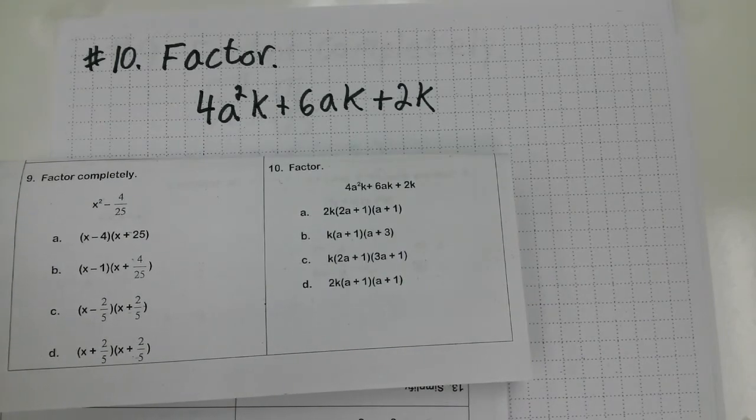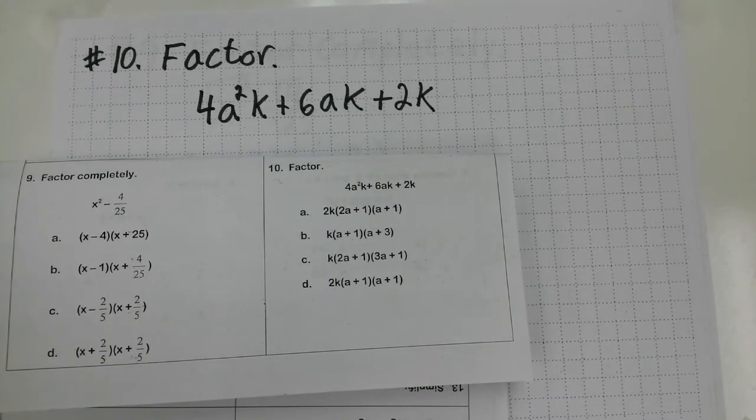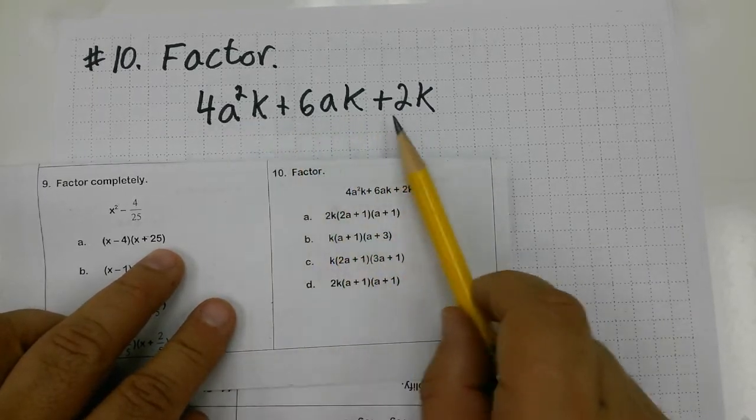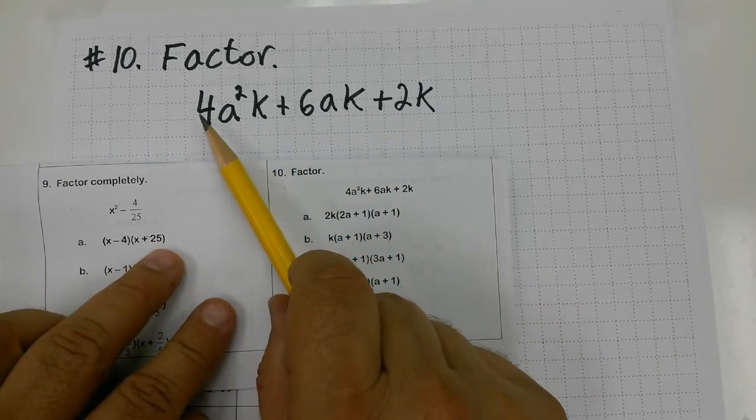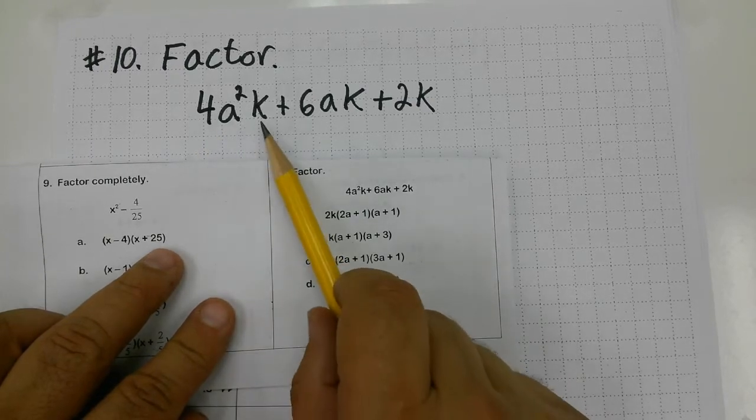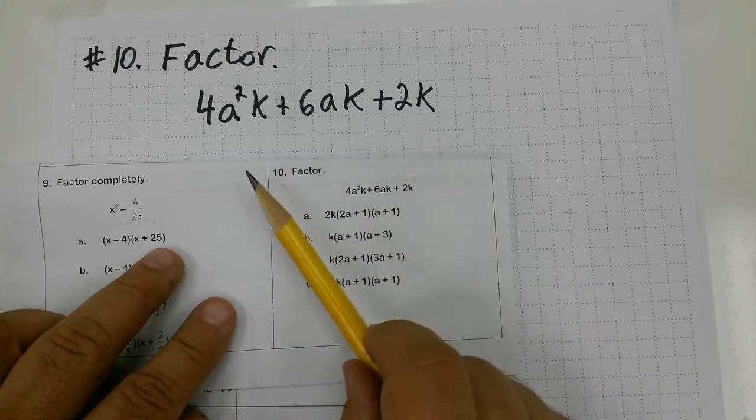Number 10 on the PERT practice test asks me to factor a pretty scary looking trinomial. I don't have just an a squared. I have a leading coefficient of 4, and then they throw a couple of extra letters in there.